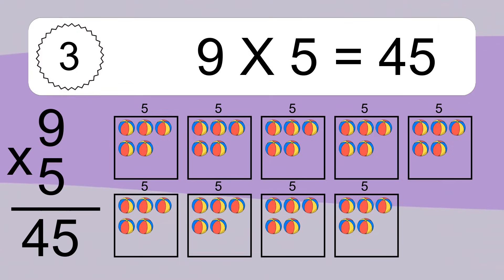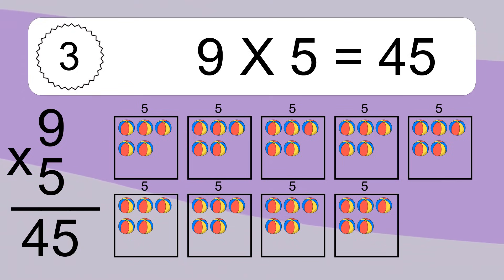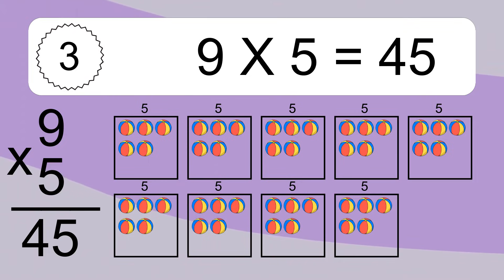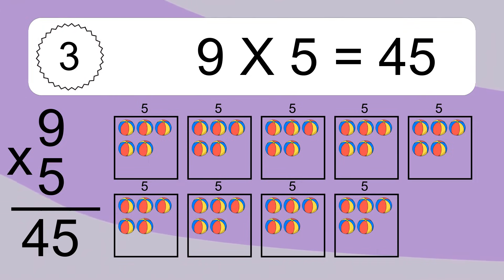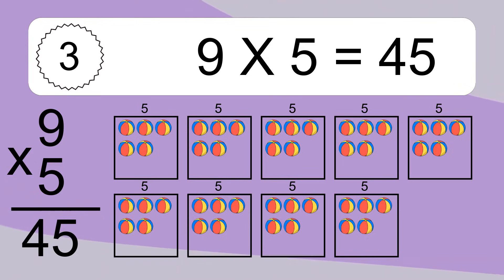We have 9 boxes, and each box has 5 colorful balls inside. If you count all the balls in all the boxes together, you will have 9 times 5 balls. This equals 45 balls.